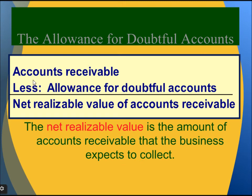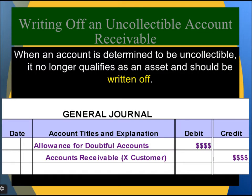Allowance for doubtful accounts: Account receivable minus allowance for doubtful accounts gives the net realizable value of accounts receivable — the amount the business expects to collect. When an account is determined to be uncollectable, it no longer qualifies as an asset and should be written off. The journal entry is: debit allowance for doubtful accounts and credit accounts receivable for that particular customer.